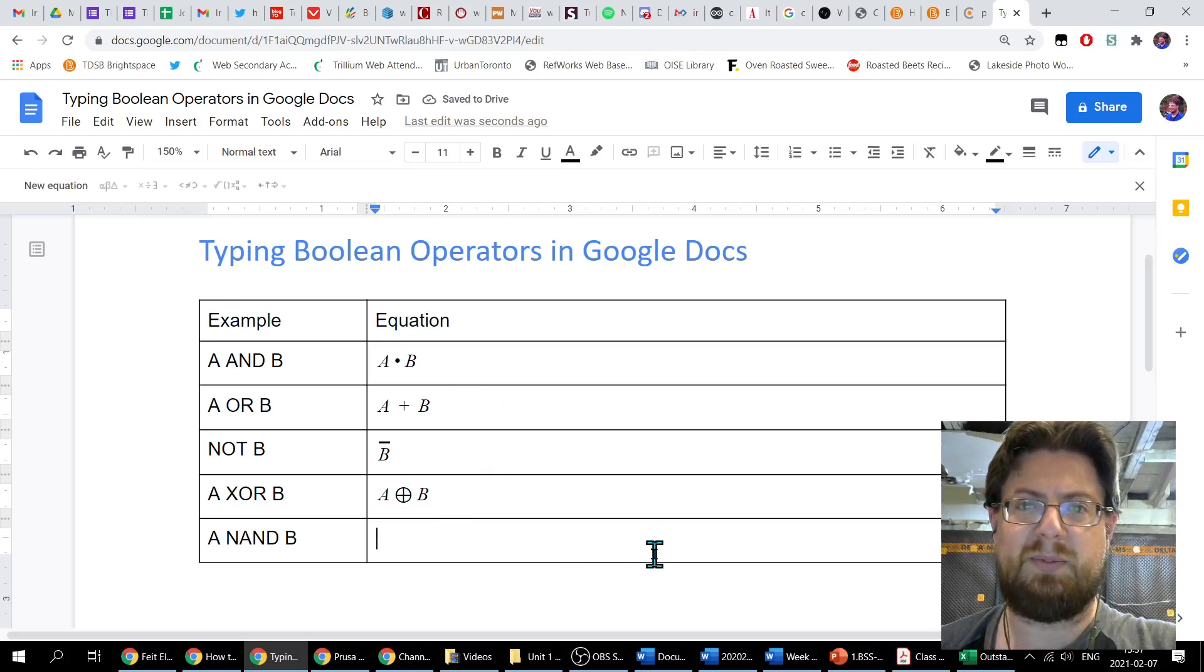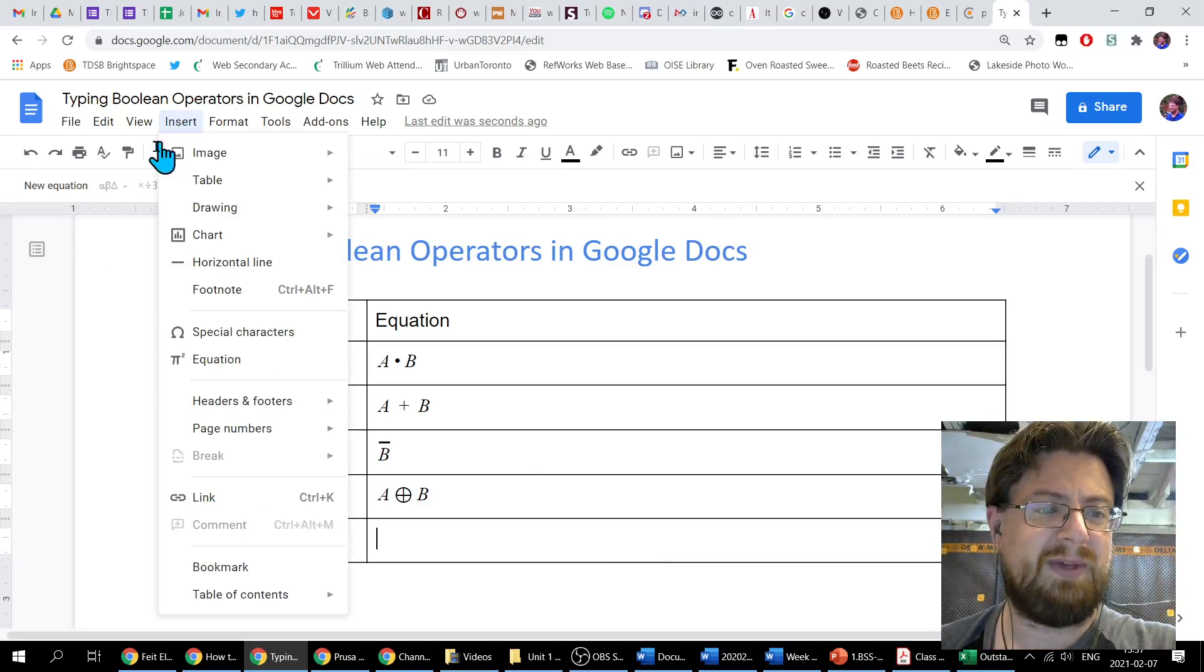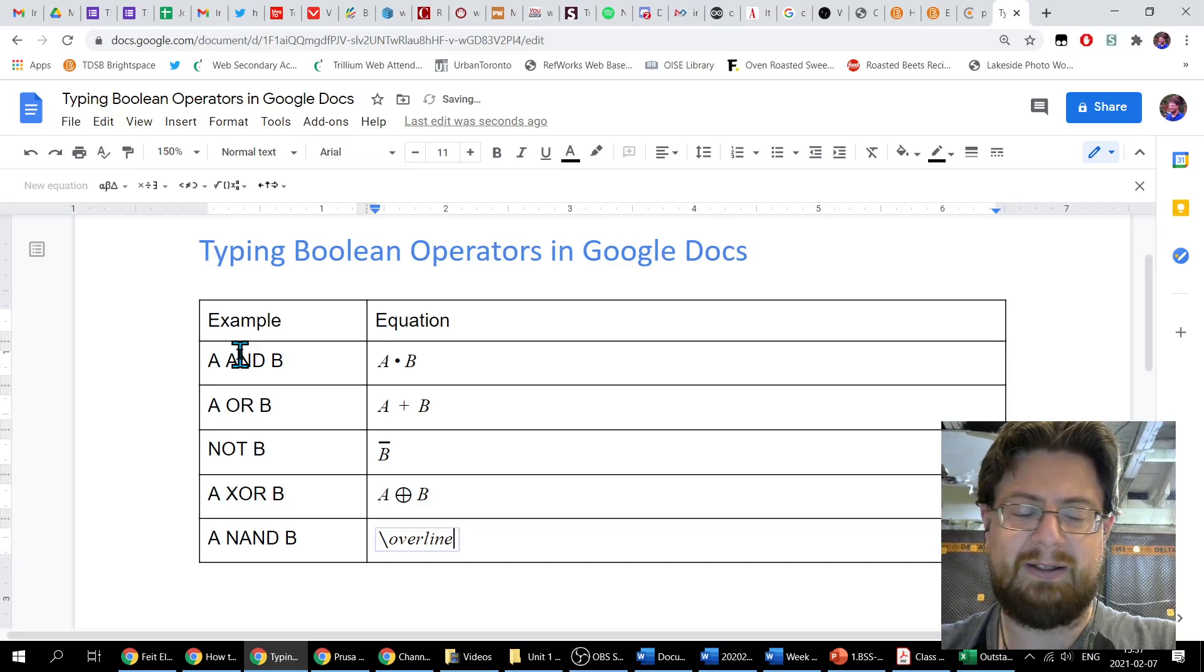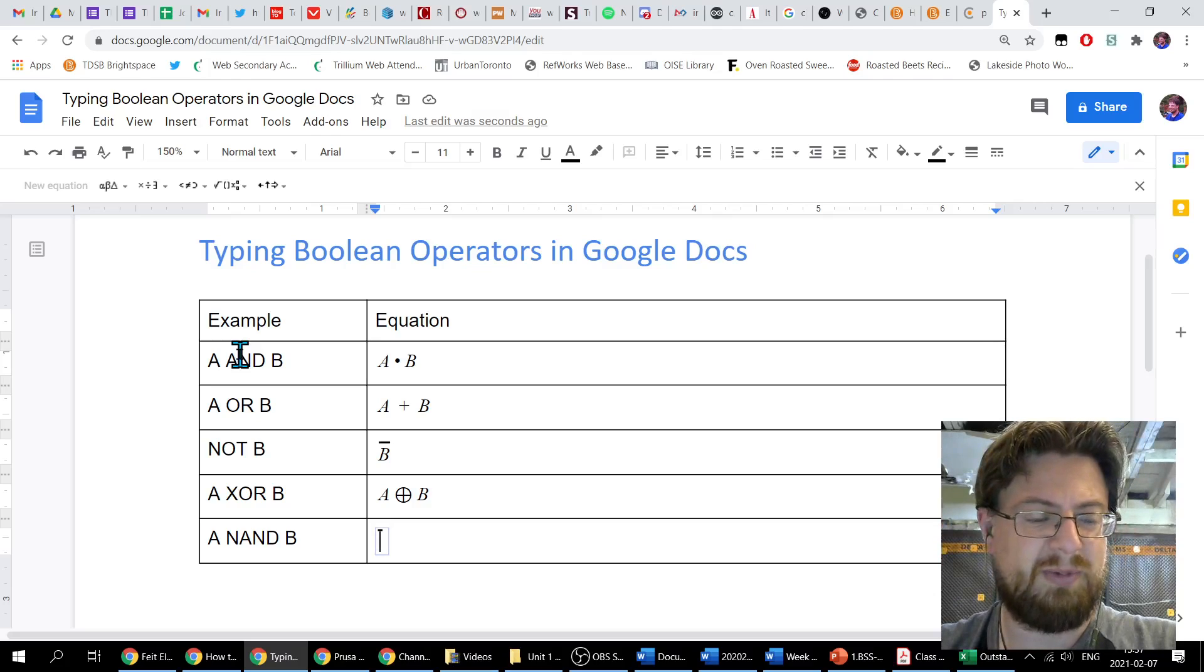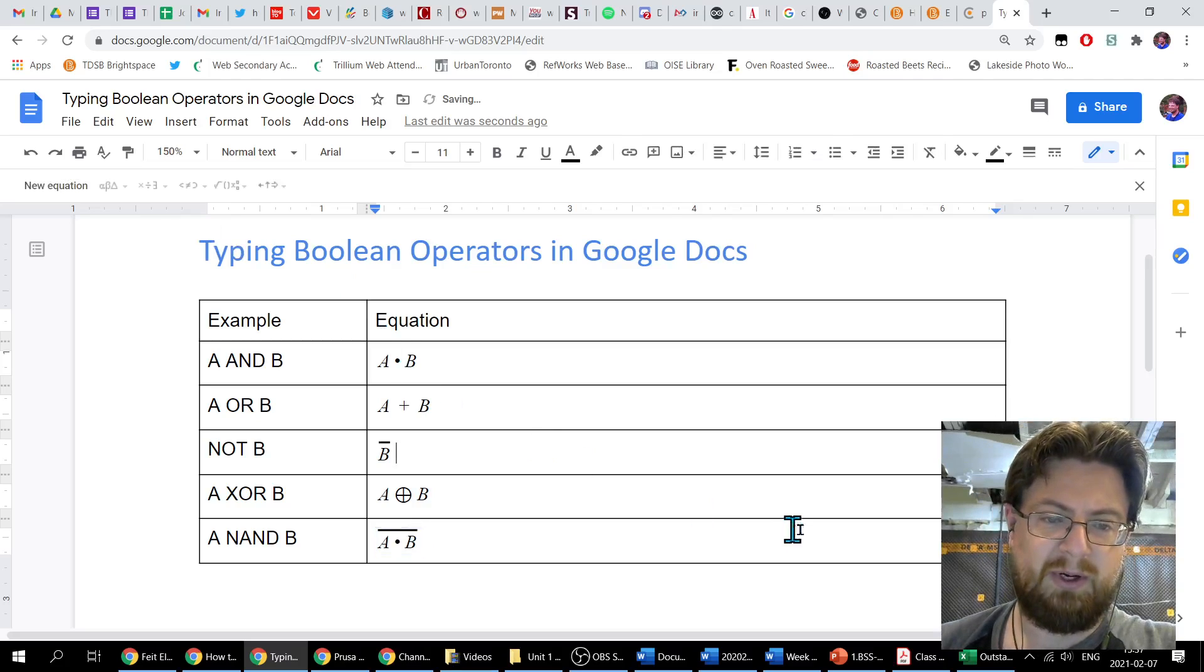And A NAND B. We're going to demonstrate now having an overbar across multiple characters. If I come in and insert an equation, again, backslash overline space. Now I'm into the overbar territory where I've got that horizontal bar above my letters. I'm going to do A, insert character - I need the bullet operator - B. And there we go.